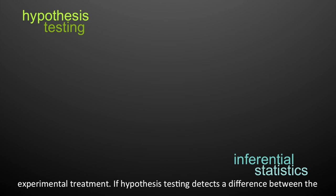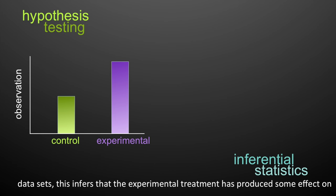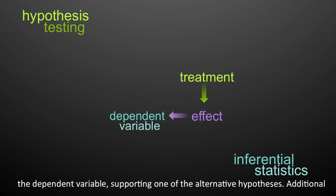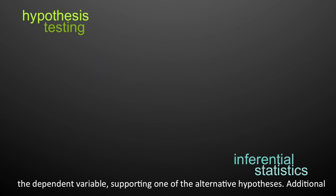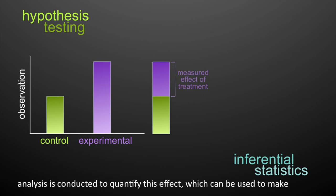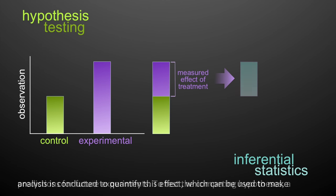If hypothesis testing detects a difference between the datasets, this infers that the experimental treatment has produced some effect on the dependent variable, supporting one of the alternative hypotheses. Additional analysis is conducted to quantify this effect, which can be used to make predictions for future experiments.